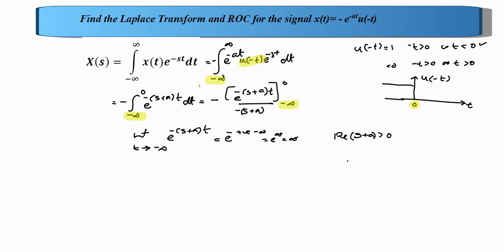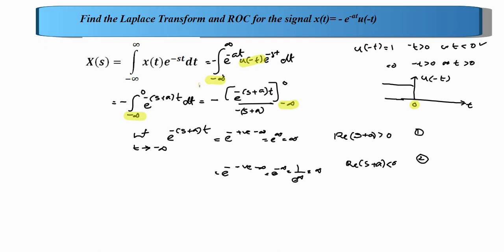Case 2: if the real part of s plus a is less than 0, the exponent has minus times a negative times negative infinity, giving e raised to minus infinity, which equals 1 over e raised to infinity, which is 0. This converges. We prefer Case 2 because we get a converging answer — in Case 1 we only get infinity. So we will use the condition that the real part of s plus a is less than 0.